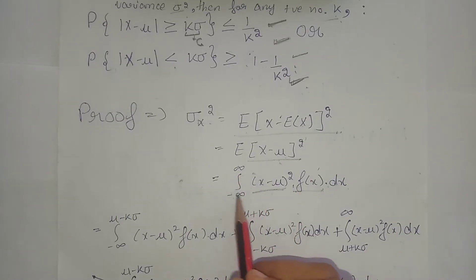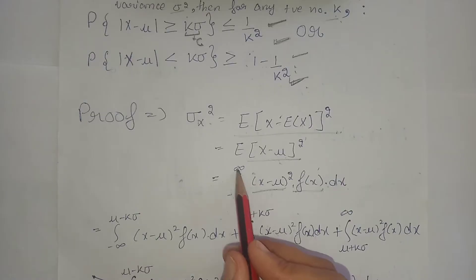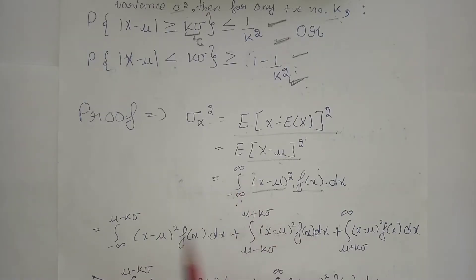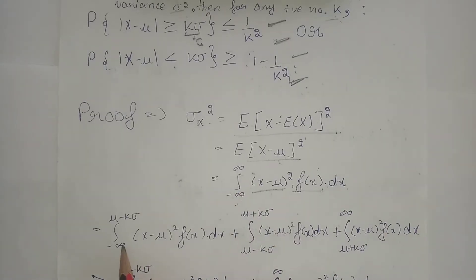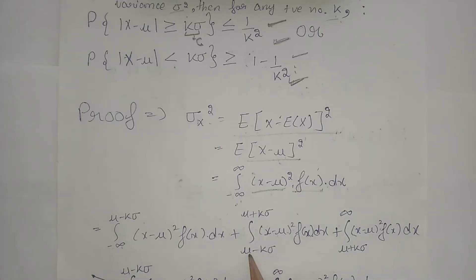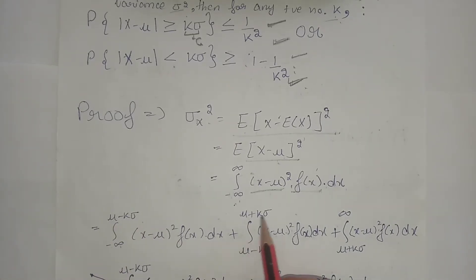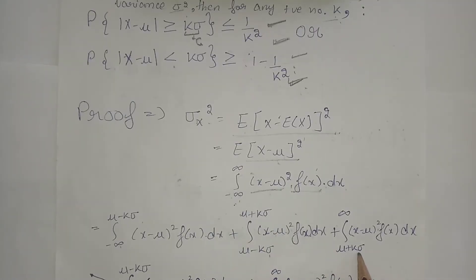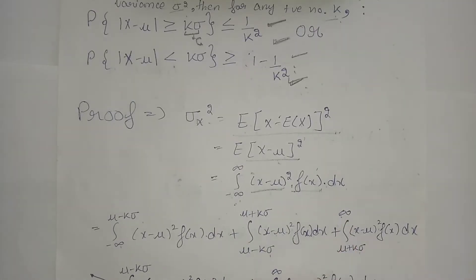Now we divide the range from minus infinity to infinity into three parts. The first part is where x goes from minus infinity to mu minus k sigma. The second part is where x goes from mu minus k sigma to mu plus k sigma. And the third part goes from mu plus k sigma to infinity.